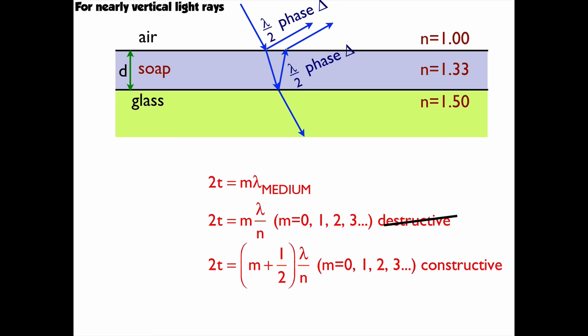So now instead of 2t equals m lambda over n being destructive, it becomes constructive. The same thing is true at the bottom. Instead of m, for the m plus a half equation, constructive interference turns into destructive interference.